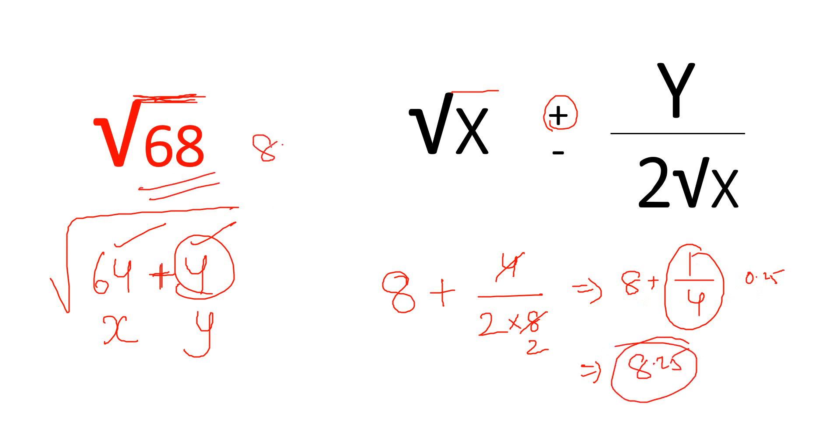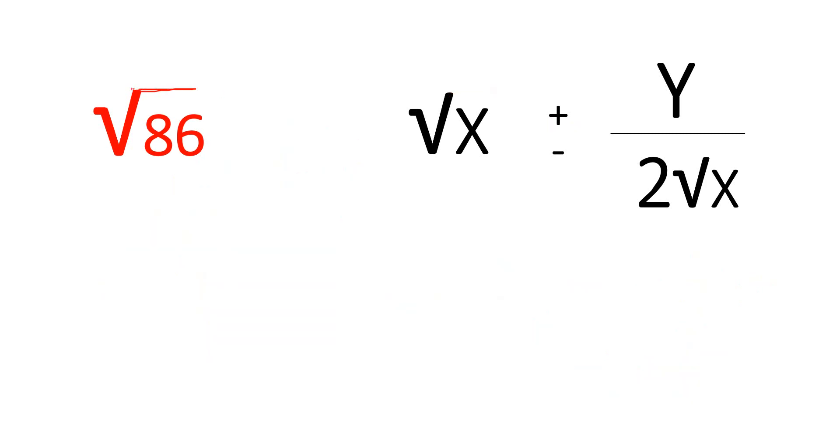This is the answer, approximate value. Perfect is not the answer, approximately 8.25. Next example, square root 86. Near to that is 81. We can write 81 plus 5. Simple, 9 square root of 81, 9 plus y plus 5, 2 into 9, 18. Simple, so 9 plus 5 by 18 is the answer. Very easy to solve.